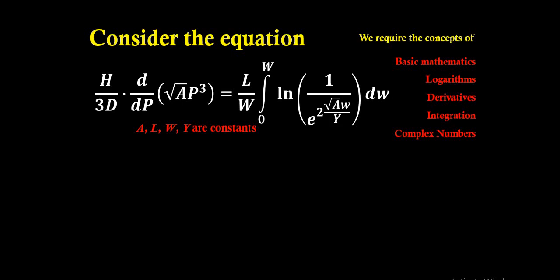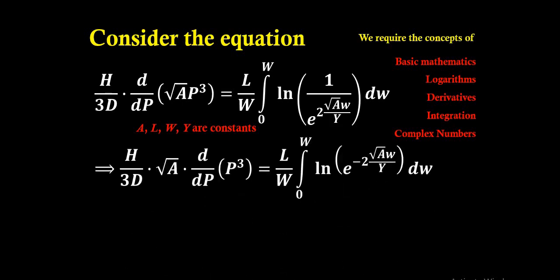With this notation we can write in the next line H by 3D into root A into d/dP of P cube, because A is a constant, so is root A. So root A will come out from the differentiation sign. So d/dP of root A into P cube is same as root A into d/dP of P cube to the right side equal to L by W, integral 0 to W.